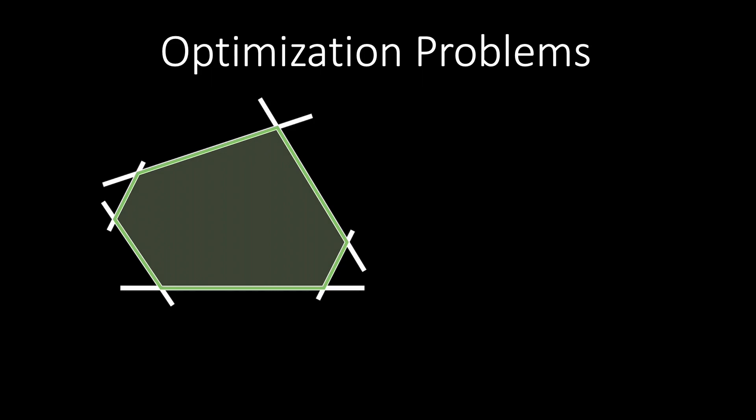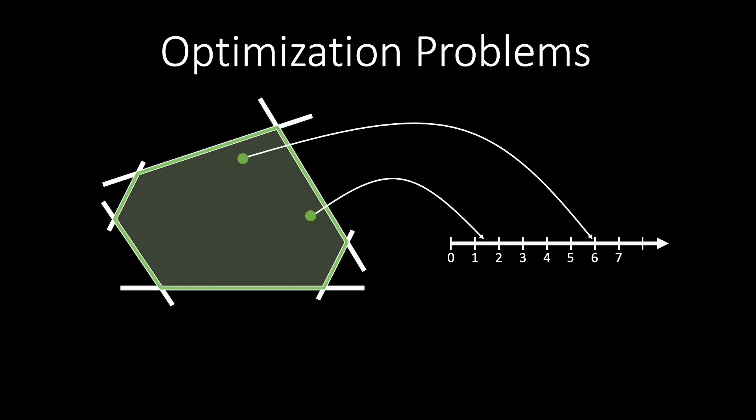Here we see an area of feasible solutions. Each feasible solution has a quality. Sometimes computing the optimal solution can be difficult. In this case, it might help to search for a solution of a good enough quality. For instance, we might ask if there is a feasible solution with a quality of at least 6.